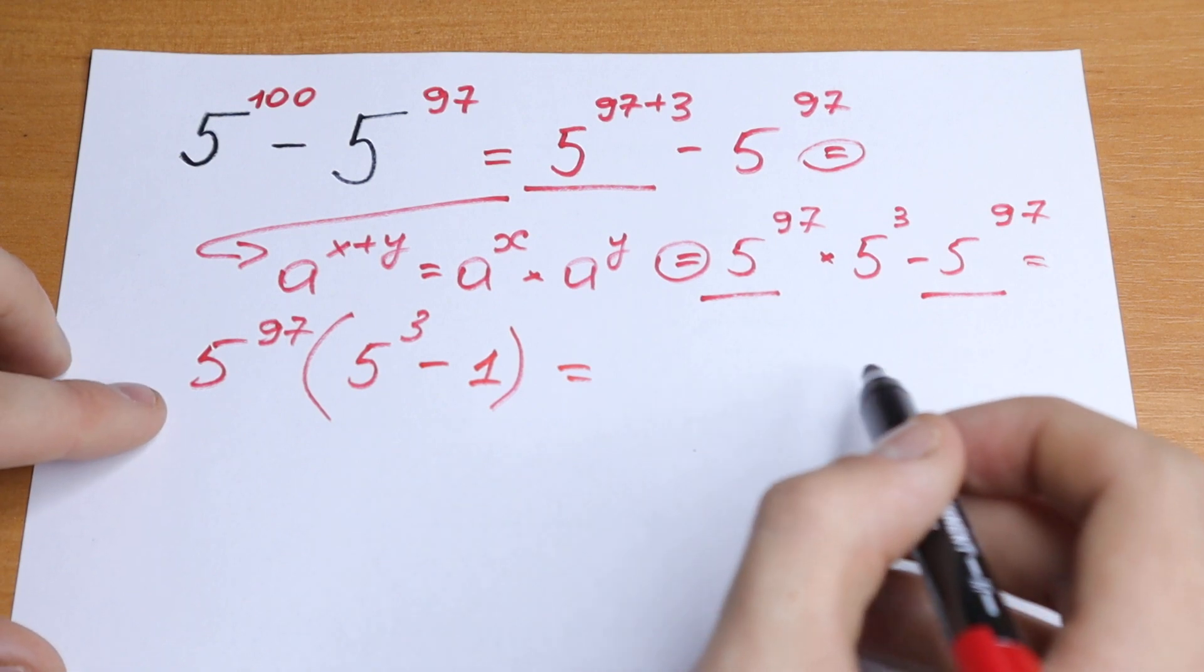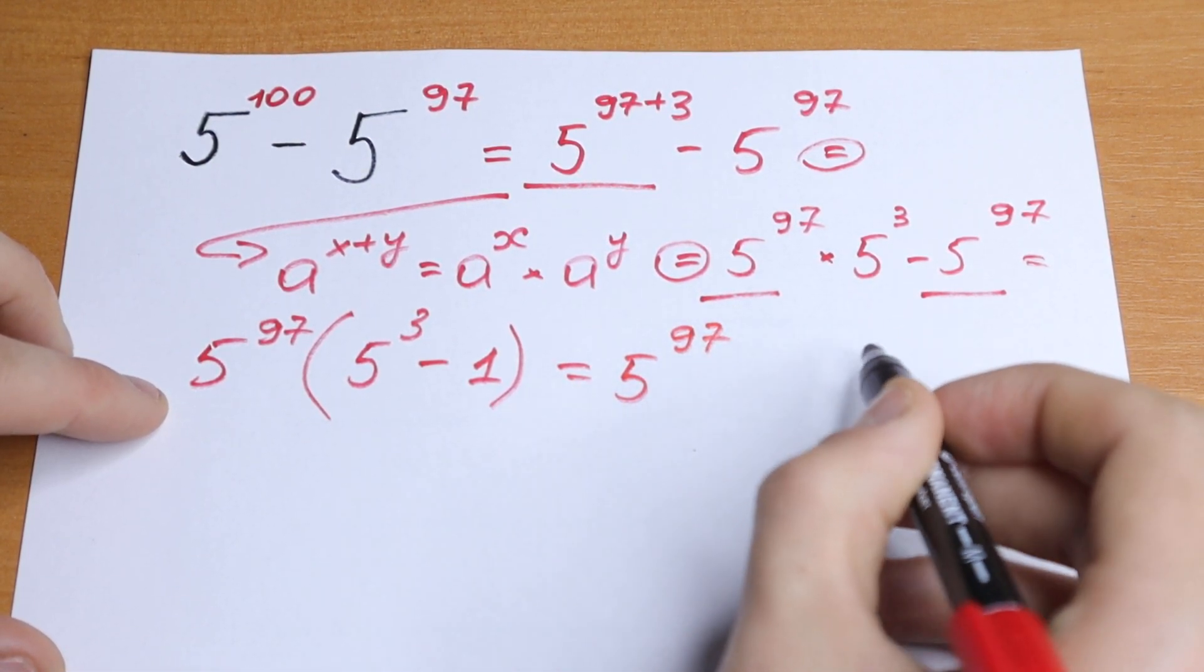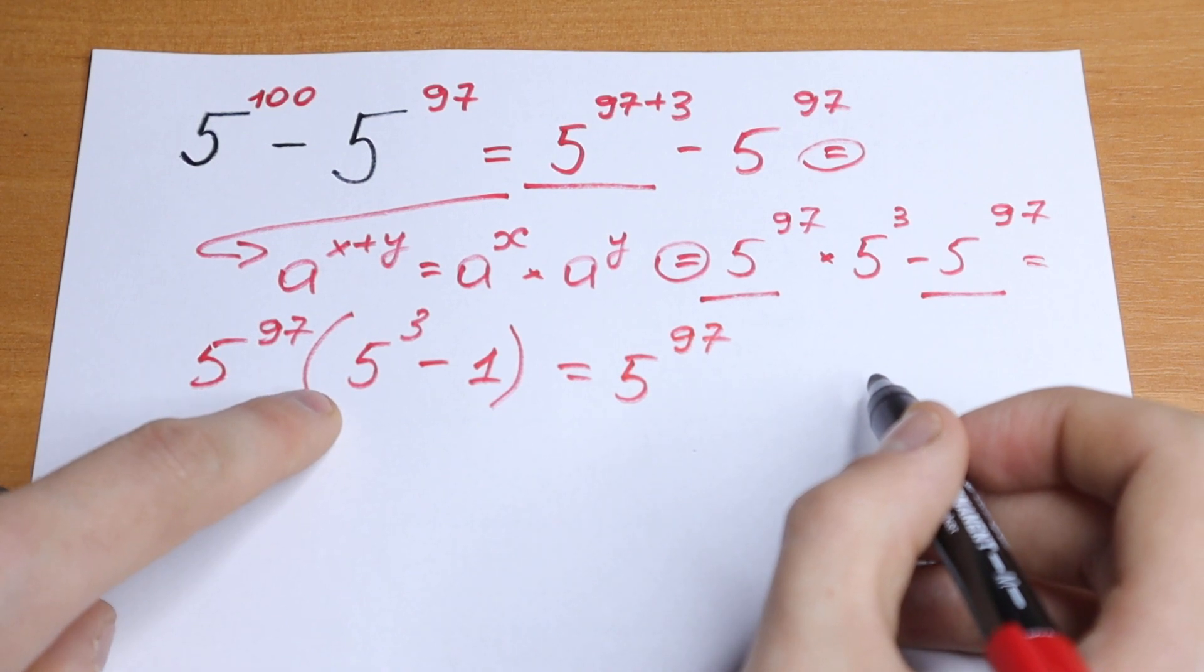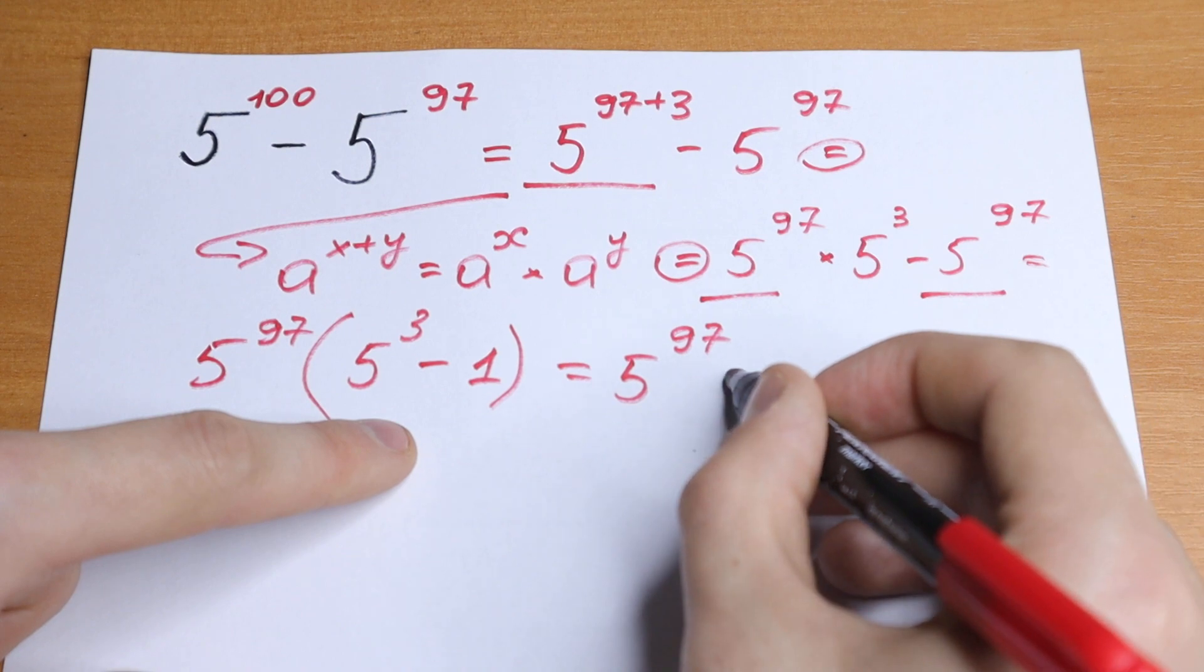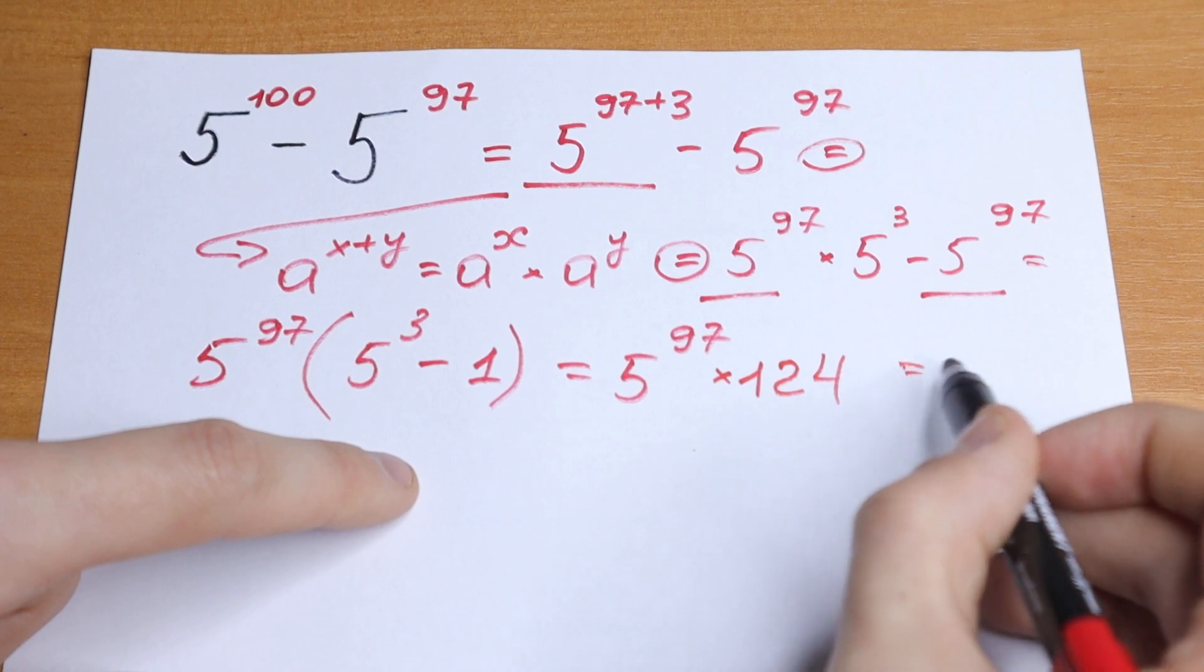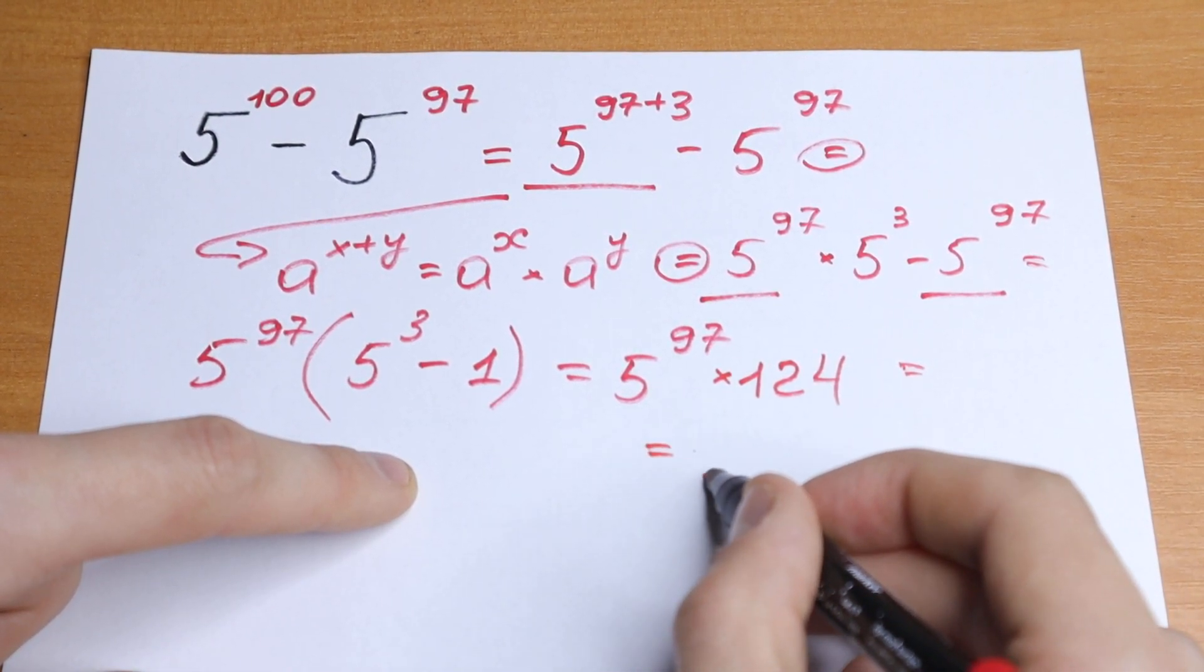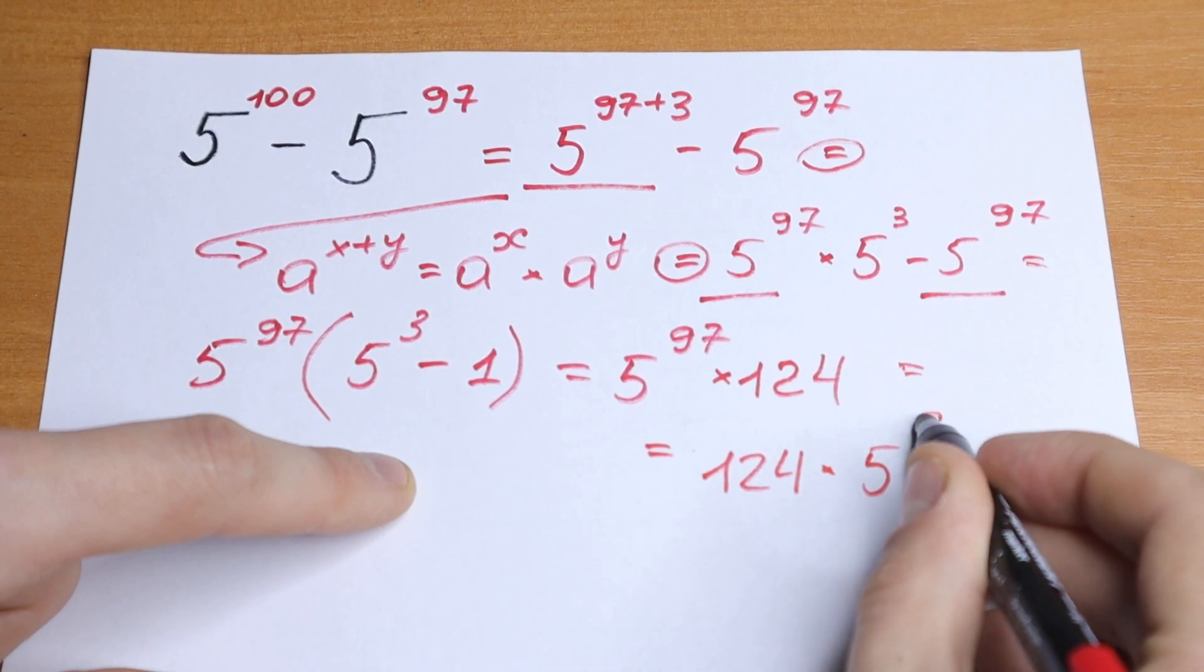Let's simplify this. We will have 5 to the power 97 times 5 cube equals 125, minus 1, we will have 124. So times 124. And it's better to write it as 124 times 5 to the power 97.